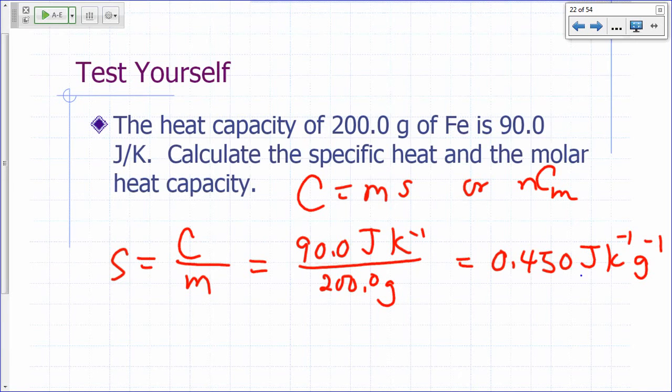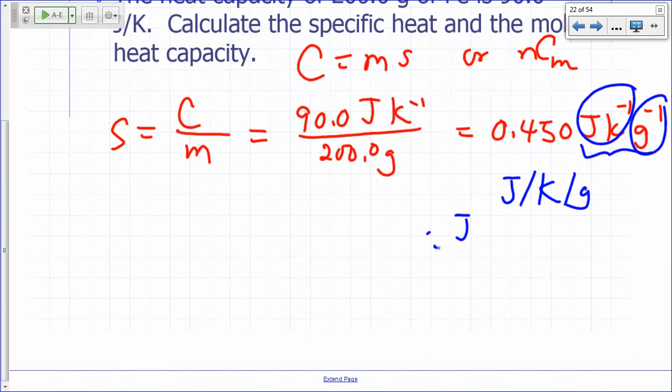So the unit for specific heat is the unit for heat capacity per gram. You can write it as joules per kelvin per gram or you can say joules per degree Celsius per gram. Those are all units for specific heat.